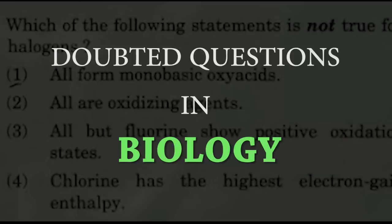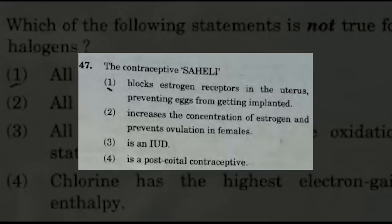Biology has 90 questions and 2 are still in doubt. The first question is: the contraceptive Saheli — the suggested answers are options 1 and 2. Option 1: blocks estrogen receptors in the uterus, preventing the egg from getting implanted; and option 2: increases the concentration of estrogen and prevents ovulation in females.